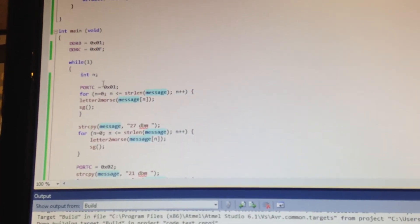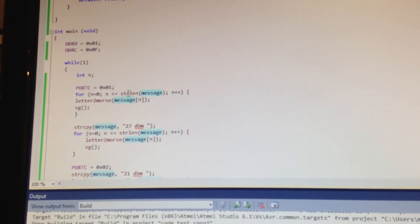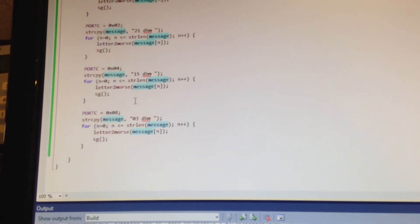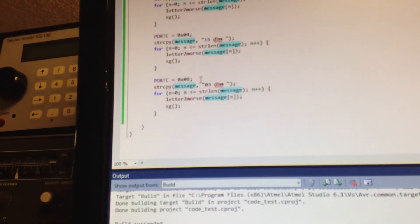And I'll loop through that. I'll do it once for the 27 dBm and then I'll drop it down to 21, 15 and 3 dBm.